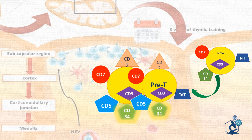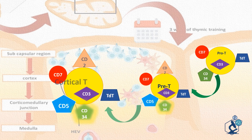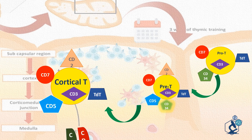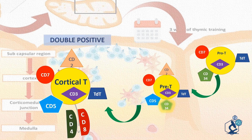Pre T cells move from the subcapsular region to the cortex, where they mature into cortical thymocytes. In the thymic cortex, double negative T cells lose CD34 and start to differentiate into double positive T cells that are both CD4 and CD8 positive. This happens through several stages. CD1A is expressed only on cortical T lymphocytes.